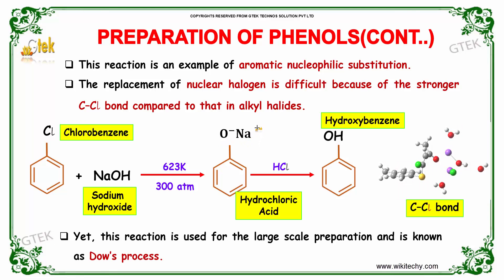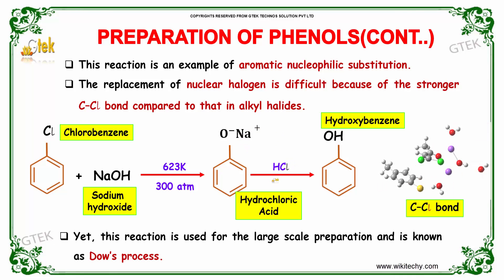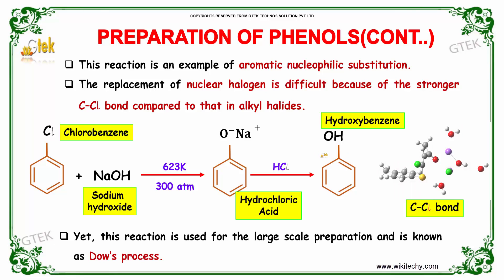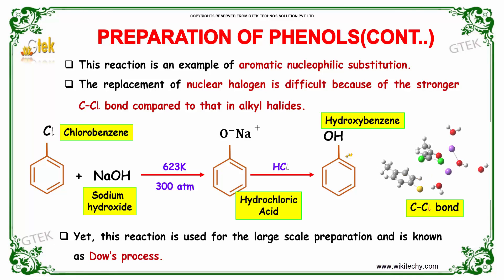The Na can be easily displaced by the chlorine ion, therefore we add HCl. The chlorine ion from HCl replaces the Na, OH is formed, and NaCl is obtained as a side product. This reaction is used for large-scale preparation and is known as the Dow's process.